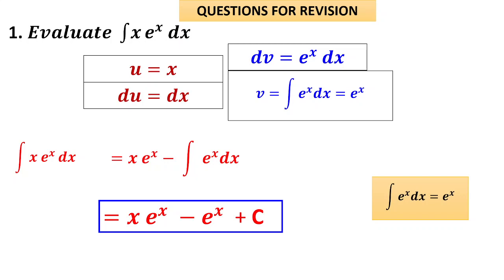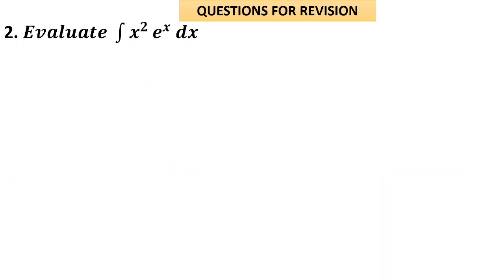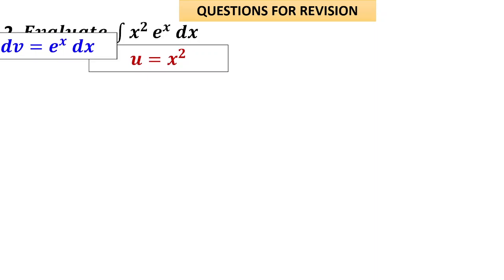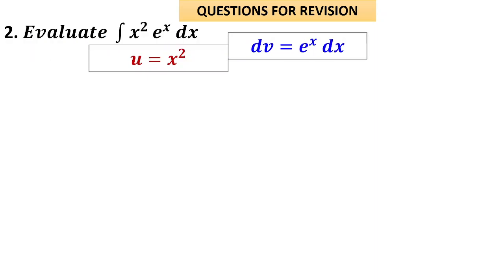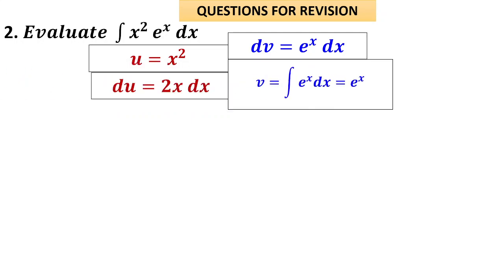Problem 2: integral of x²·eˣ, where the power of x is increased. We must apply integration by parts twice. Start with u = x² (the polynomial) and dv = eˣ dx. Then du = 2x dx and v = eˣ. Applying the formula gives x²·eˣ minus integral of eˣ·2x dx.